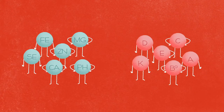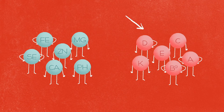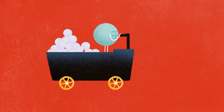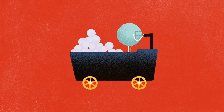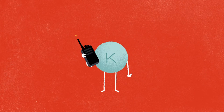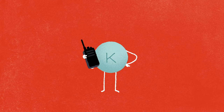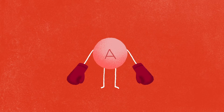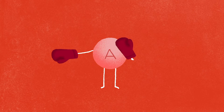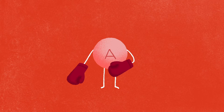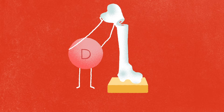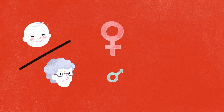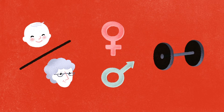Food is also composed of micronutrients: minerals and vitamins. Among the minerals, iron, for example, is involved in oxygen transport in the blood, while potassium contributes to the transmission of nerve messages. Among the vitamins, vitamin A is important for vision and immune defences, while vitamin D is involved in bone building. Did you know we need different amounts of all these nutrients depending on our age, our gender, and our physical activity?